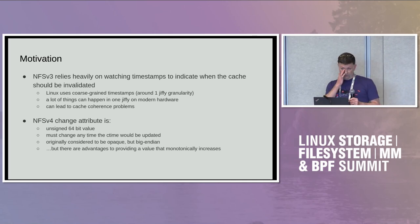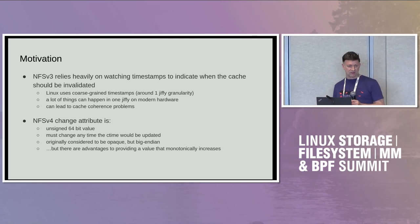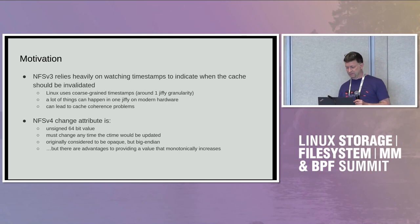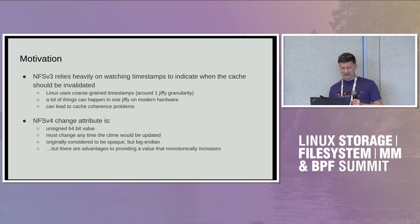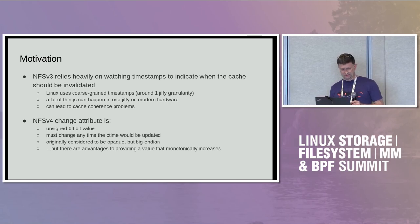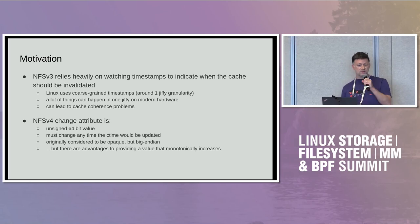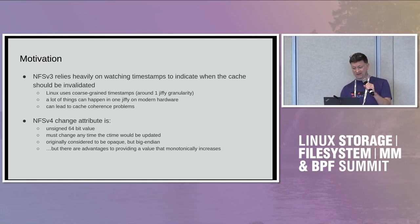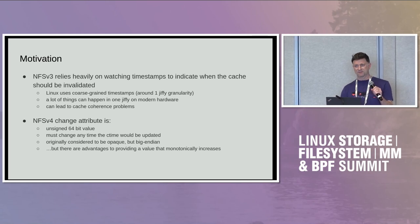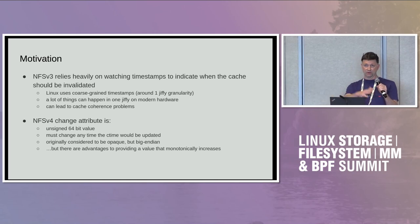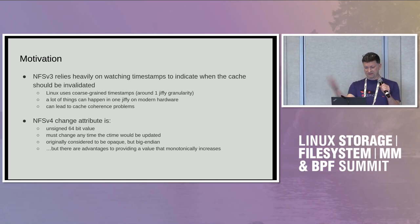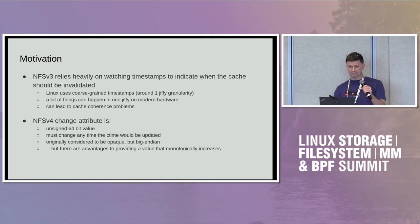For V4, what they came up with was this idea of a change attribute — just an unsigned 64-bit value that has to change any time the C time would be updated. It was originally considered to be sort of an opaque value, but there are advantages to providing a value that increases monotonically. In particular, the client can know that if it sees a smaller iVersion than what it has, it can throw that out as no longer valid.